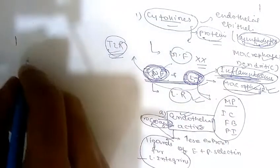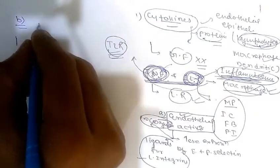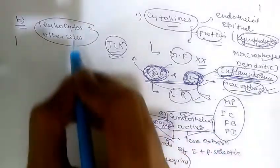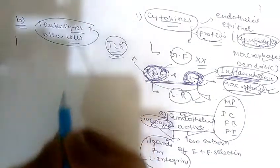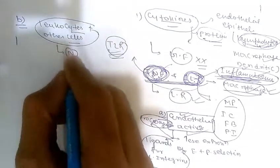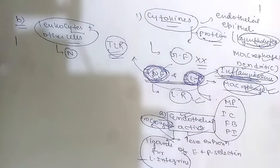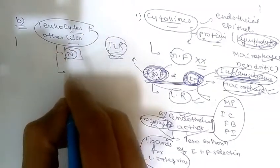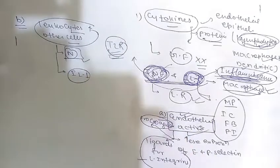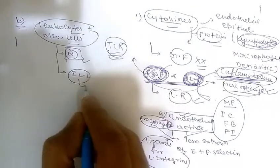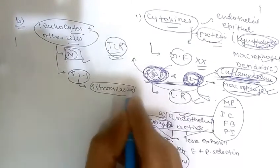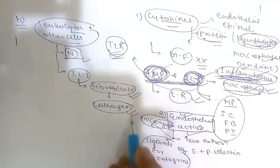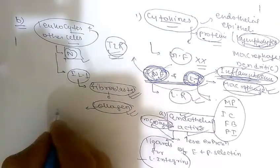The second function is activation of leukocytes and other cells. TNF augments responses of neutrophils to other stimuli such as bacteria and endotoxin, and stimulates the microbicidal activity of macrophages. IL-1 activates fibroblasts to synthesize more collagen fiber and stimulates proliferation of synovial and mesenchymal cells.